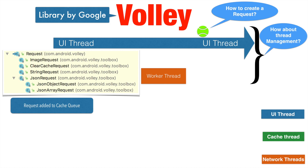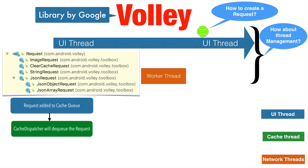So you basically add the request to the cache queue, and then you have another thread called the cache dispatcher. What this basically does is it picks up the request from the queue and proceeds to execute that particular request. There are two flows that can go from here. We will consider only one particular flow, which is when the data is not already cached on the device side — that is a cache miss.